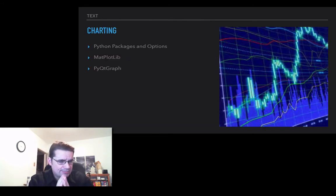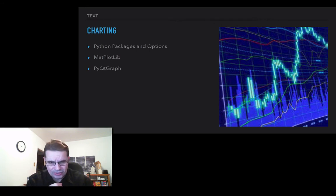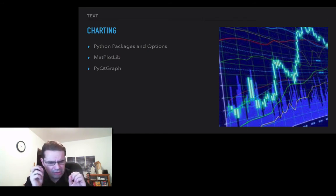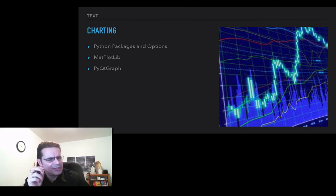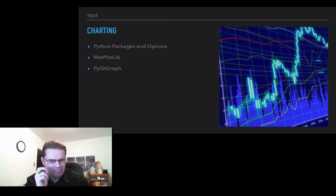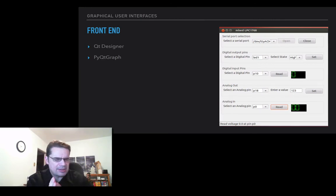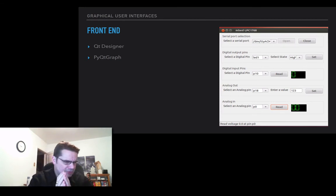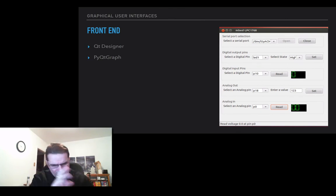A couple of things about charting. I'm a believer in visualization — it tells a story of the past. So we're going to focus on the packages and options for Python charting. Obviously Matplotlib is the big one. But another one that a lot of people don't know about is PyQT Graph — this package is awesome. It's fast and it's really modern. The other big thing I'm discovering about Python is that it's a great front-end designer — you can design GUIs or graphical user interfaces. One tool you can use is QT Designer, and the other is PyQT Graph. We'll do a whole session around that.